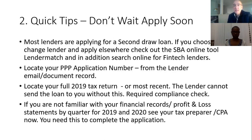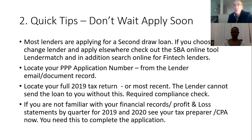You will need your 2019 tax return or most recent — without providing it, the lender won't transfer the money into your account. It's a required compliance check. If you're not familiar with your financial records — profit and loss statements by quarter for 2019 and 2020 — see your tax preparer or CPA now. Software like QuickBooks can create quarterly P&Ls showing the revenue loss. If your loan is over $150,000, you will need that at the point of application.